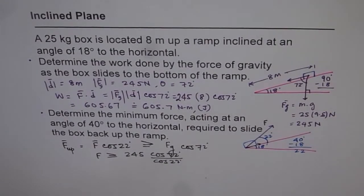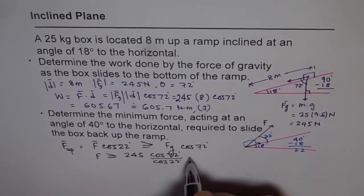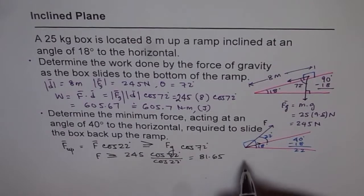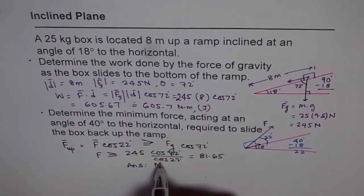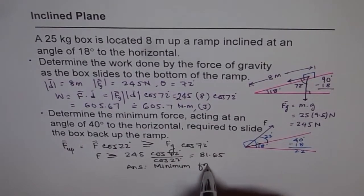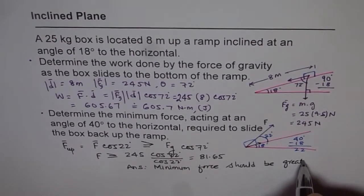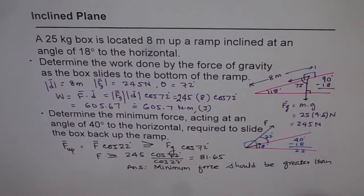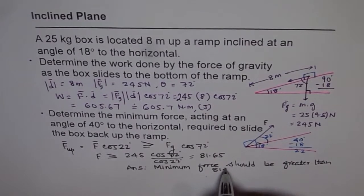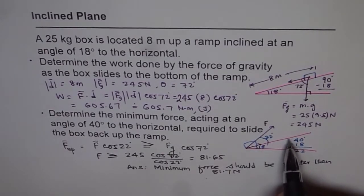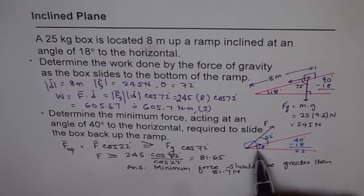Calculating this: 245 times cos of 72 degrees divided by cos of 22 degrees gives us 81.65, which we approximate to 81.7. Therefore the minimum force required must be greater than 81.7 Newtons when applied at an angle of 40 degrees to the horizontal to push the box up the inclined plane.